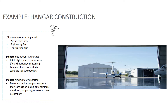Direct impacts follow the immediate action being investigated, such as a policy implementation or a construction activity. Indirect impacts are business-related impacts derived from changes in the direct category and represent changes in supplies or services to support the changes at the direct business. Induced impacts are based on changes in household spending from the income derived from direct and indirect employment.